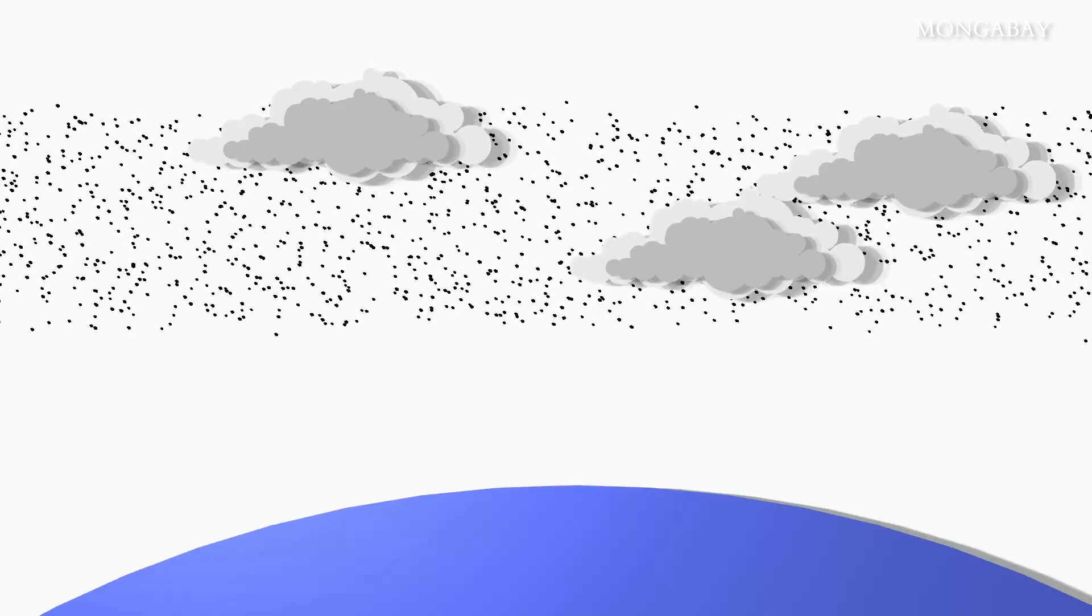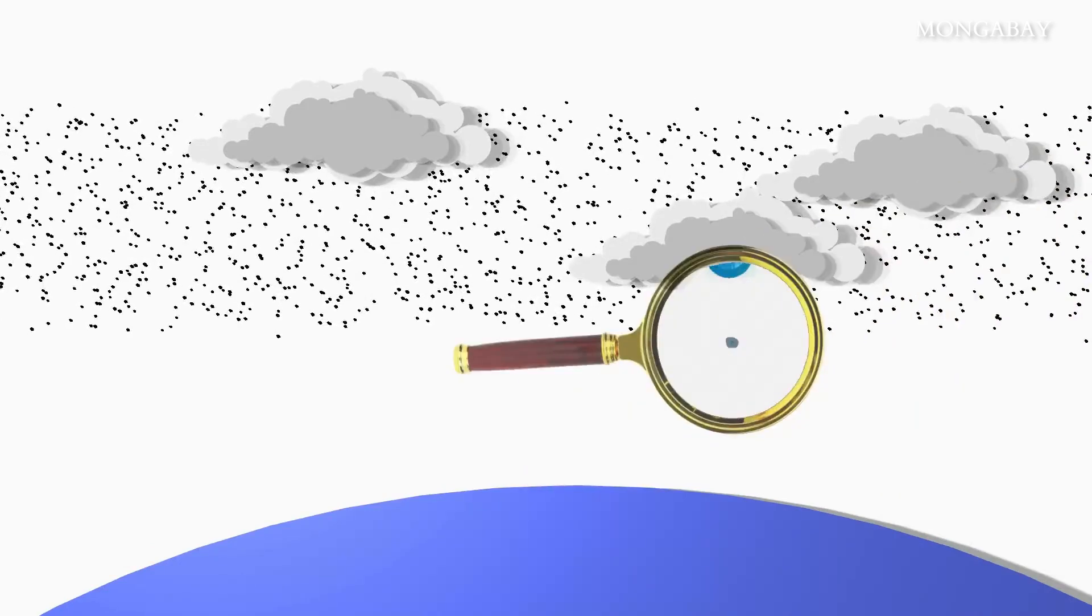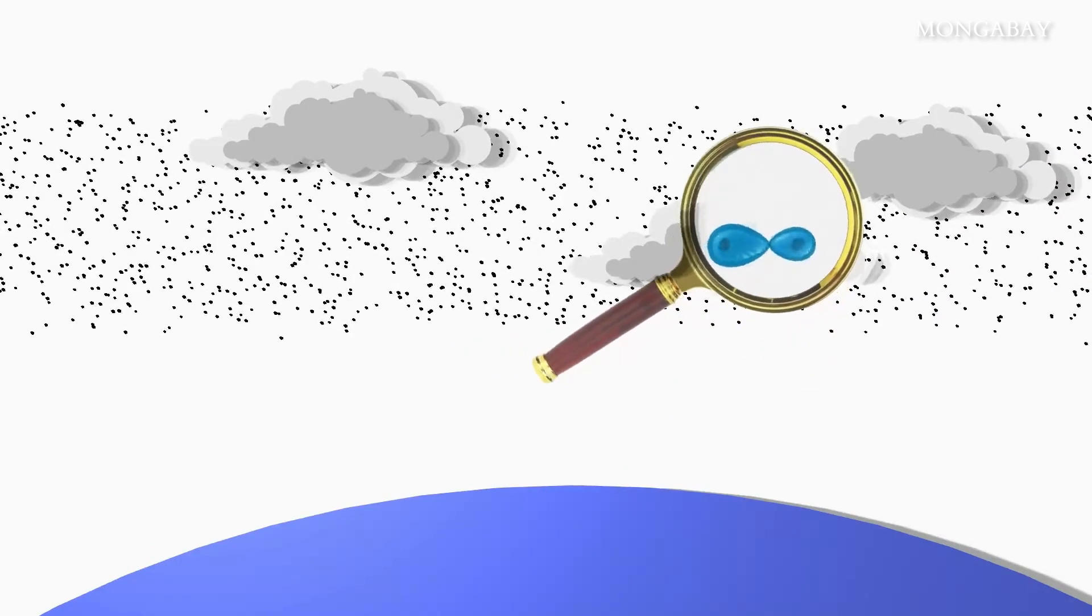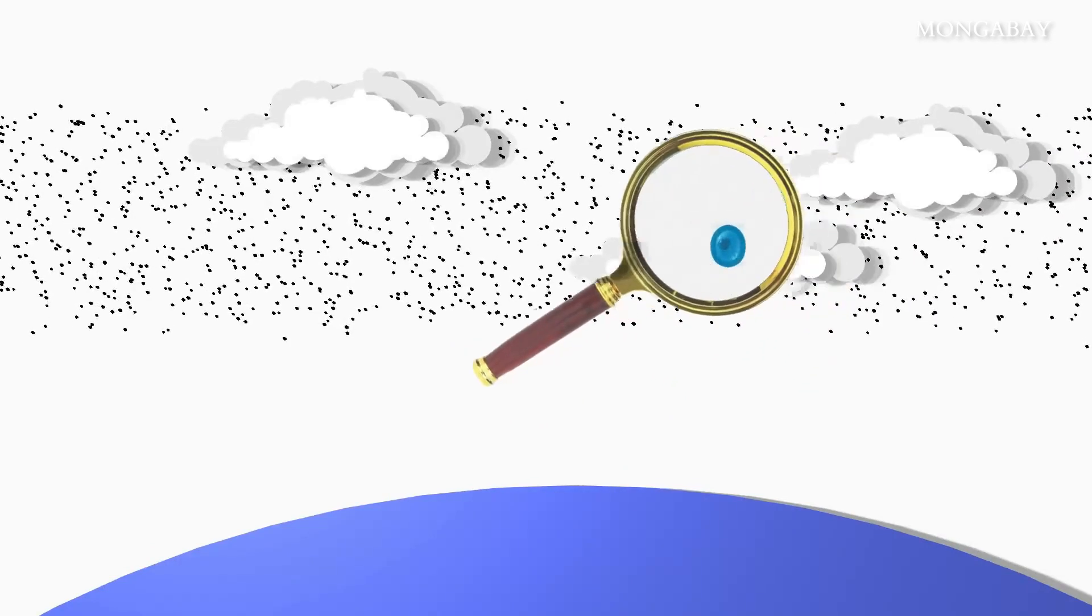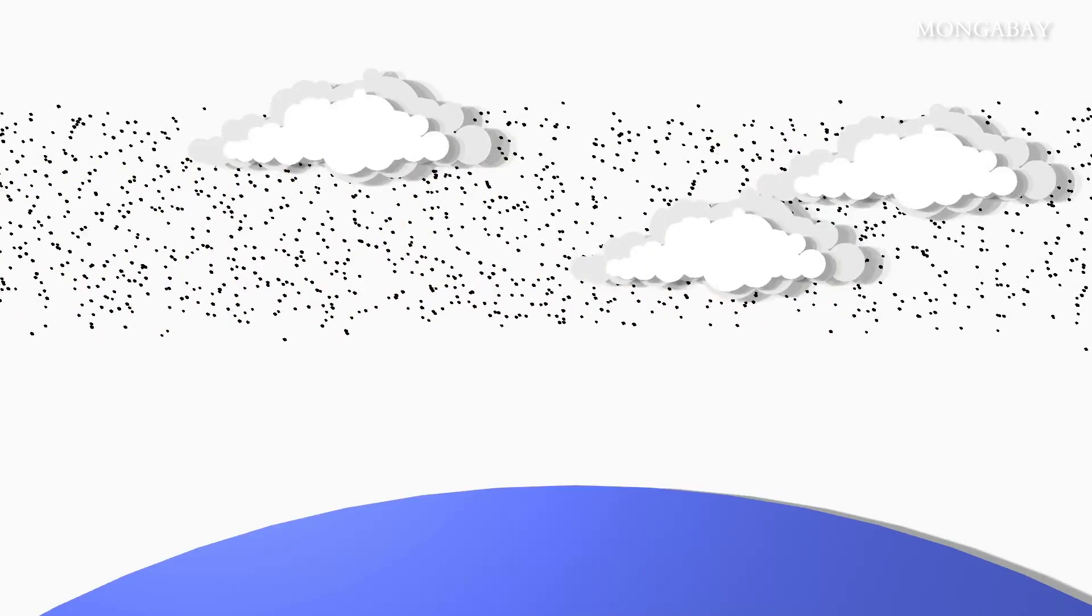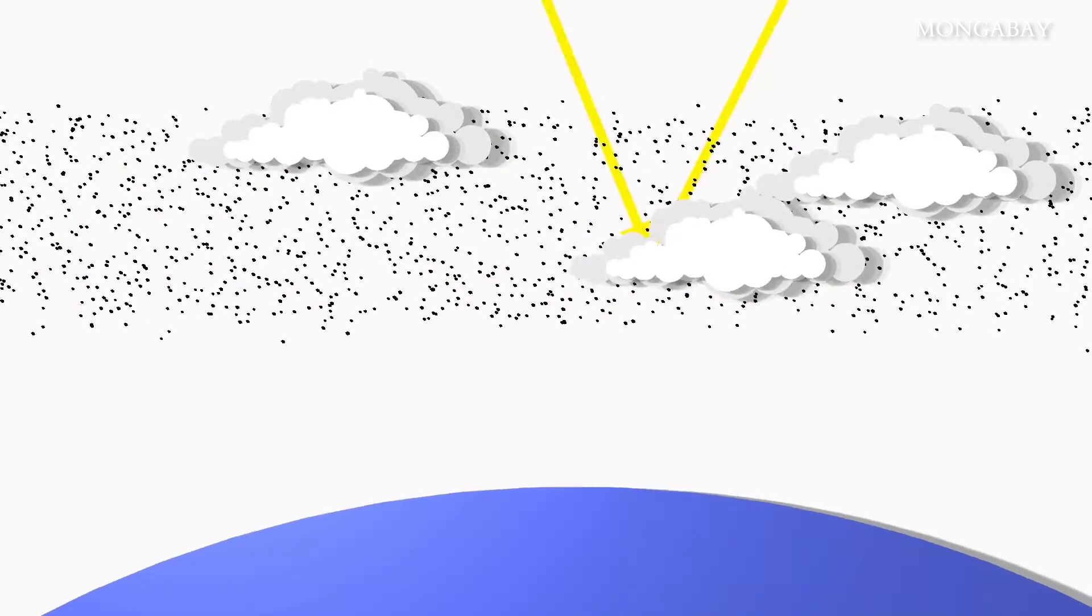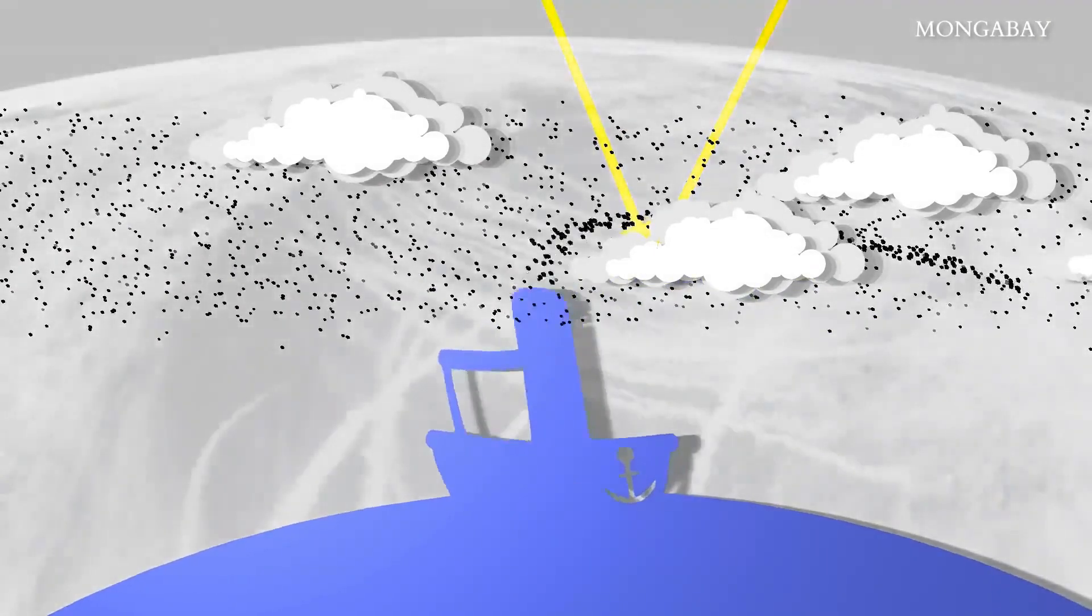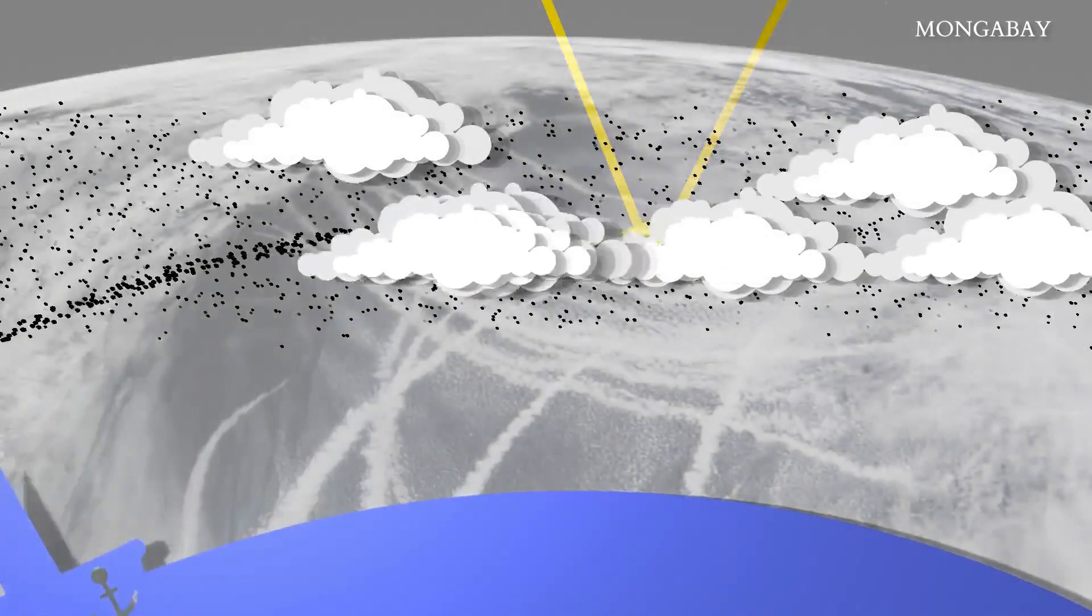Aerosols can also make existing clouds more reflective. If particles move into a cloud, droplets tend to partially reform around them, leading to smaller droplets, which means greater surface area for the same amount of water. Greater surface area means greater scattering of light. This phenomenon is clearly visible in satellite images of so-called ship tracks, bright lines where sulfate-spewing ships have passed.